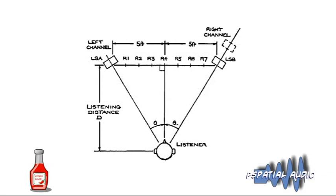If you wanted a sound fully left, the left loudspeaker would sound and the right would be silent. For center, both would sound. For partially left, the left would be stronger than the right. There wouldn't be any timing or phase differences between the signals — it's a system where purely inter-channel intensity ratio sets the stereo position.